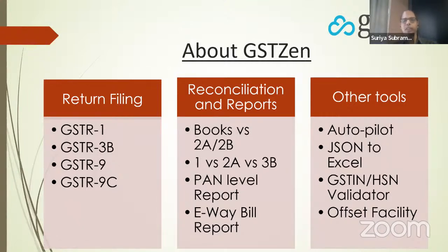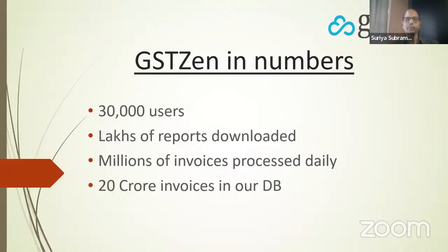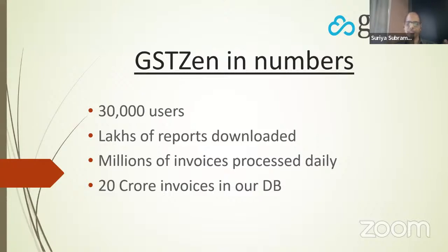We have lots of other tools. If you are coming to GST Zen only for e-invoicing for the first time, I request you to take a look at our other offerings as well. We have about 30,000 users, lakhs of reports downloaded in a year, about a million invoices processed every day, and about 20 crore invoices in our database. As far as e-invoicing is concerned, our users generate one invoice every 1 to 2 seconds — so as I complete this sentence, about 3 or 4 invoices are getting generated in GST Zen right now.